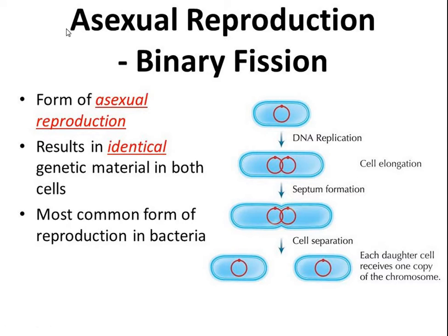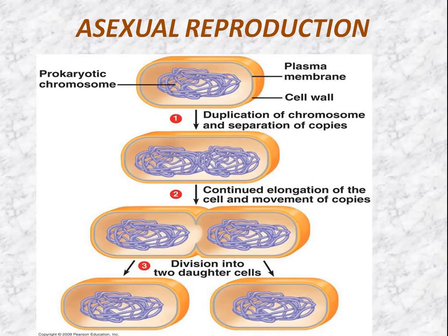In binary fission, the DNA replicates and the two copies of DNA get attached to the cell membrane. The bacterial cell elongates or enlarges in size and a septum is formed in the center. This septum gradually deepens and divides the parent cell into two daughter cells. The daughter cells soon grow, become mature within 20 minutes, and divide again, so this process keeps on going and increases the number of bacterial cells.